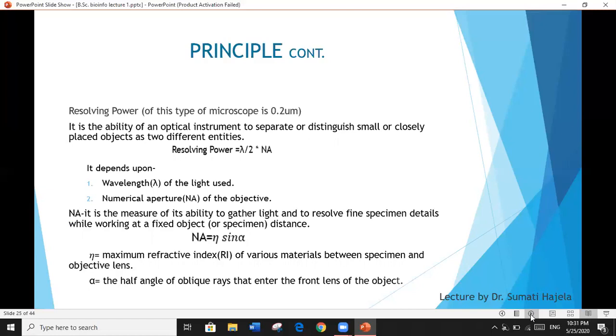This is the power of lens present in the microscope. If we try to calculate resolving power, it is equal to lambda divided by 2 multiplied by Na. What is lambda and what is Na on which resolving power depends? Lambda is the wavelength of the light used and Na is the numerical aperture of the objective lens.